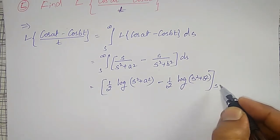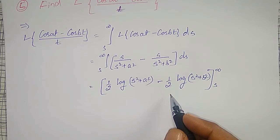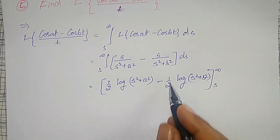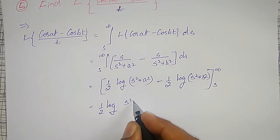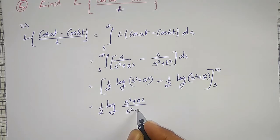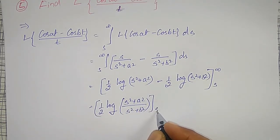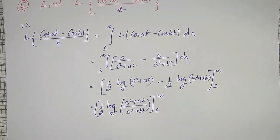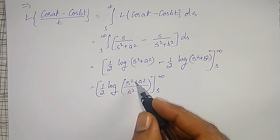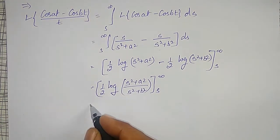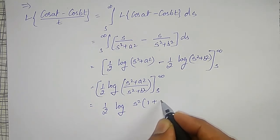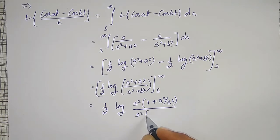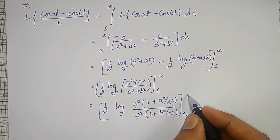This is between the limits s to infinity. We simplify by taking 1/2 times log of s squared plus a squared divided by s squared plus b squared, between the limits s to infinity. To handle the indeterminate form at infinity, take s squared common: 1/2 times log of s squared times (1 plus a squared over s squared) divided by s squared times (1 plus b squared over s squared). The s squared terms cancel.